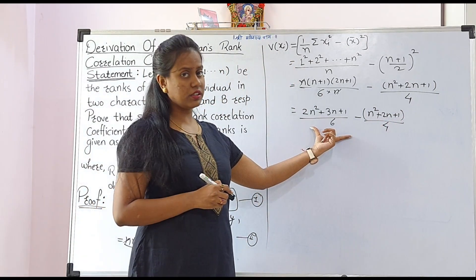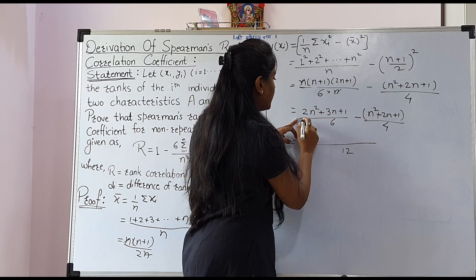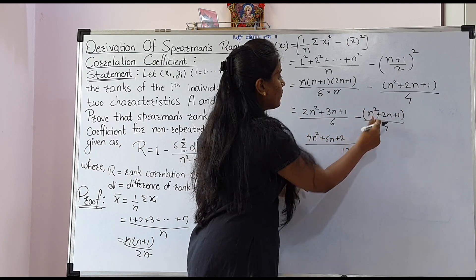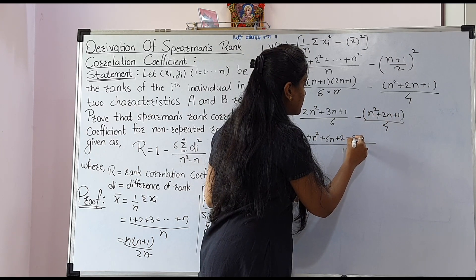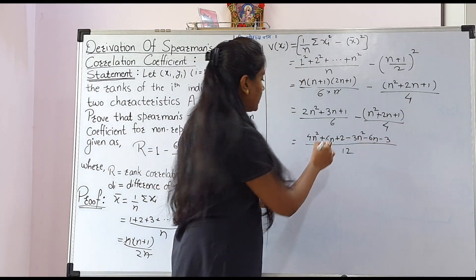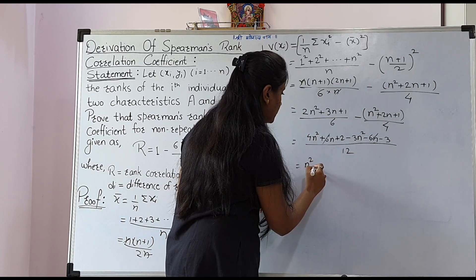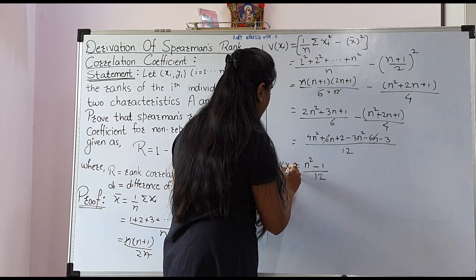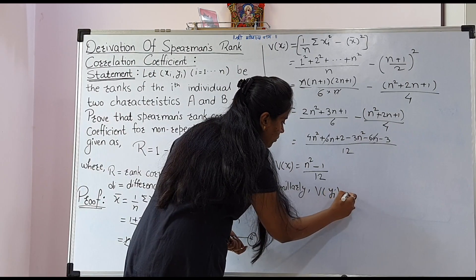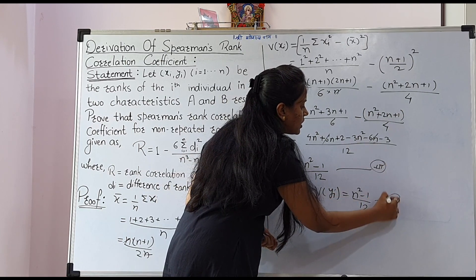Taking LCM = 12, we get [4(2n² + 3n + 1) − 3(n² + 2n + 1)] / 12 = (4n² + 6n + 2 − 3n² − 6n − 3) / 12. The 6n terms cancel, giving (n² − 1)/12. So the variance of xᵢ = (n² − 1)/12, and similarly the variance of yᵢ = (n² − 1)/12. Let these be equations 3 and 4.